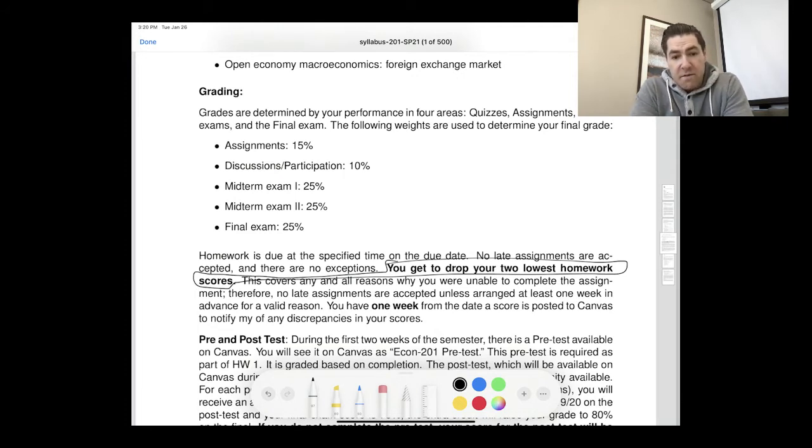If you have a bad homework assignment, no big deal—you can let it slide. Also, things are going to come up and you're not going to have time to do it. The deadline's going to pass. Whether or not you have a valid excuse doesn't really matter. You get to drop your two lowest homework scores, so you miss one, don't sweat it.